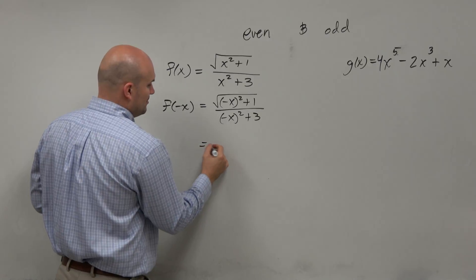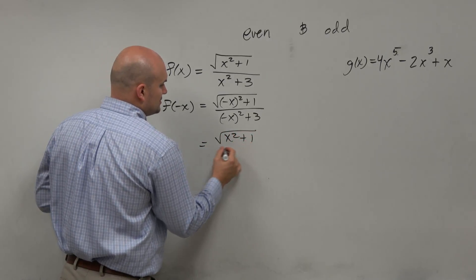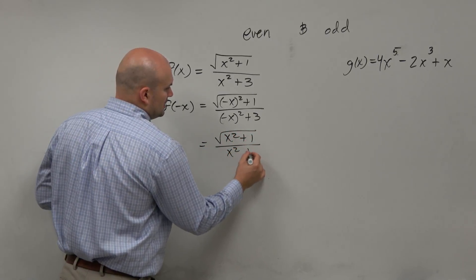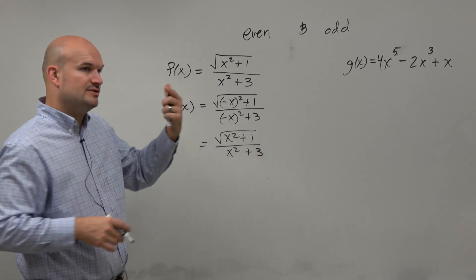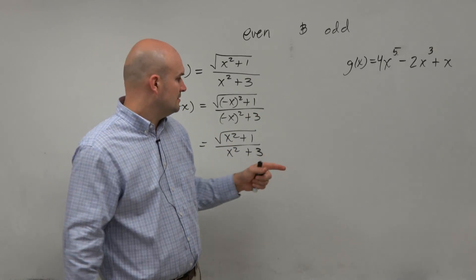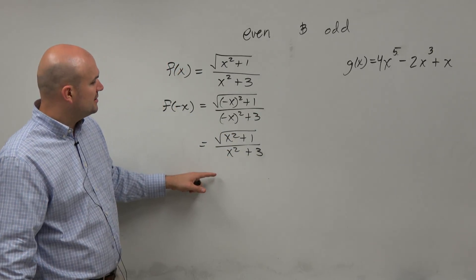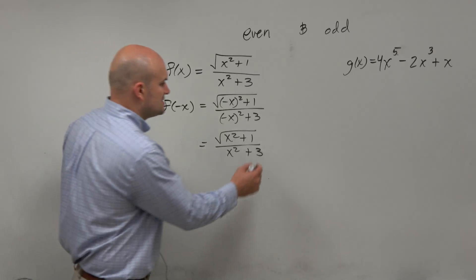So this simplifies to the exact same equation. Because any negative number or any negative expression raised to an even power is going to be positive. So you guys see how this is exactly the same?